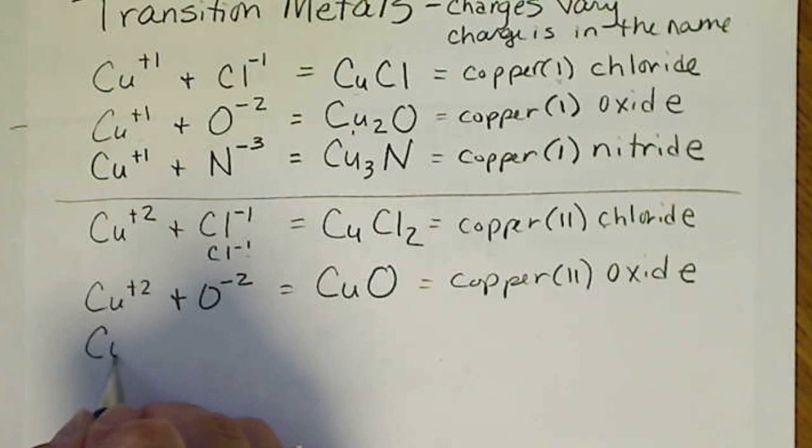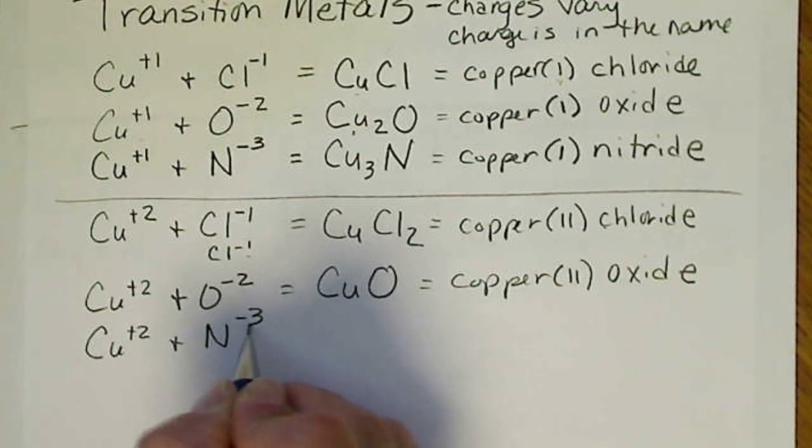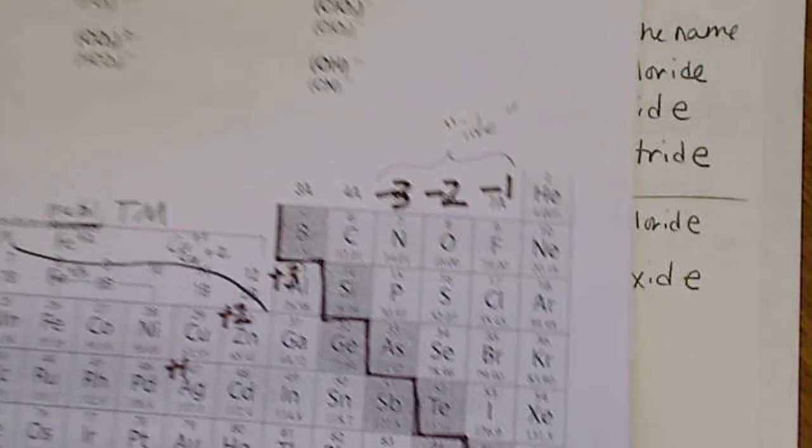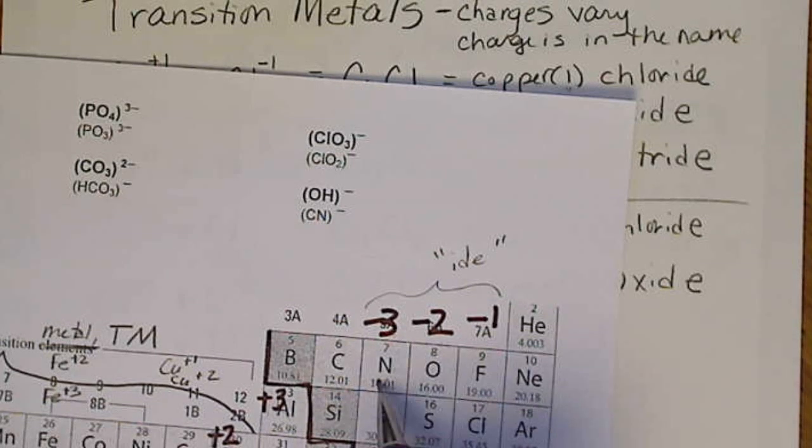And last but not least here, we'll put copper together with the nitride ion. Again, those charges are coming from where the atom is on the periodic table.